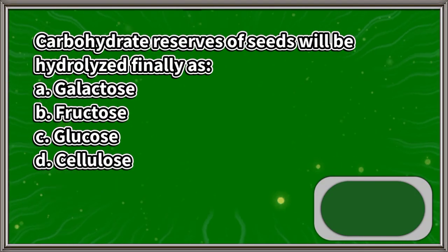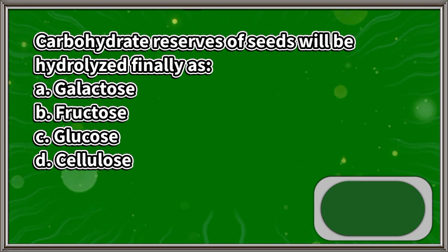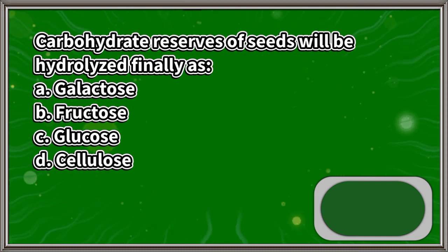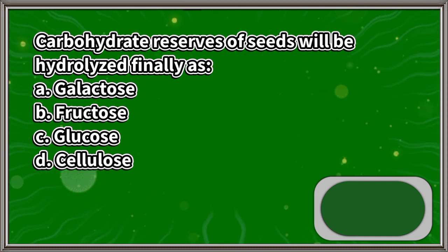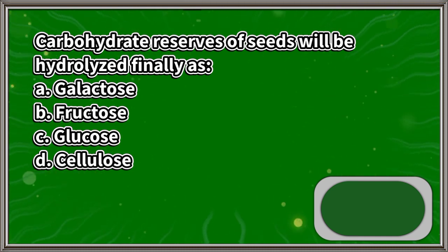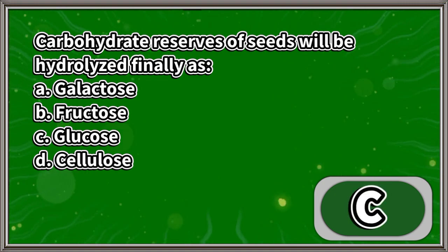Carbohydrate reserves of seeds will be hydrolyzed finally as: A. Galactose, B. Fructose, C. Glucose, D. Cellulose. The answer is letter C.